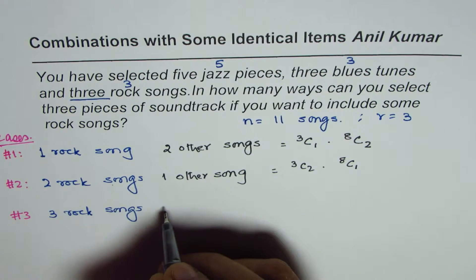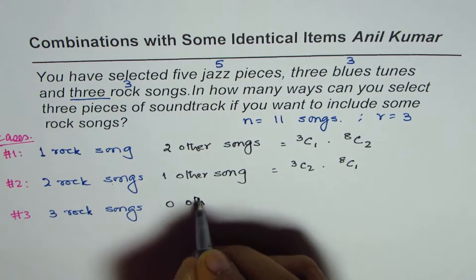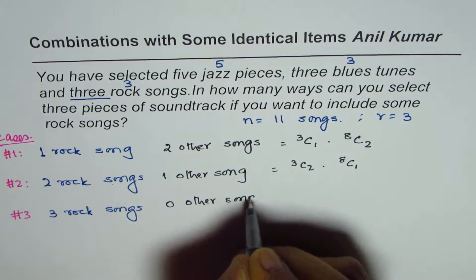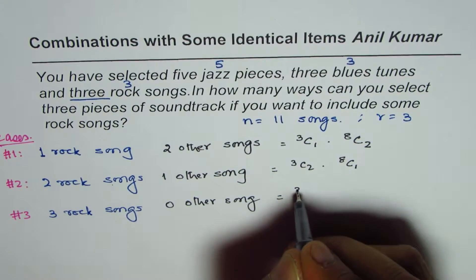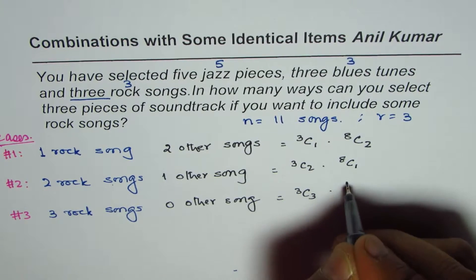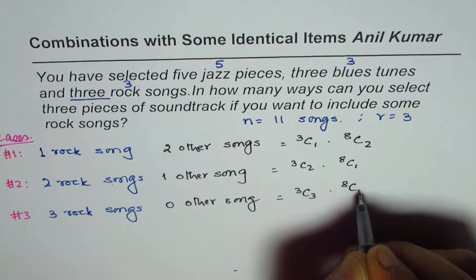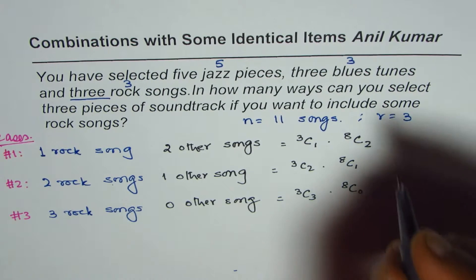The last case is three rock songs, meaning no other song — zero other songs. So we are selecting three out of three rock songs, and out of eight we are selecting zero. That gives us 3C3 × 8C0.